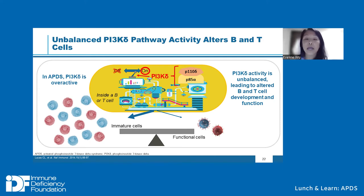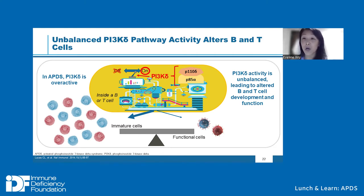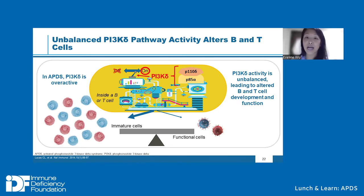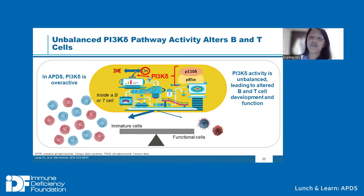When you put a magnifying glass on the PI3 kinase delta protein, it consists of two building blocks: the p110 delta catalytic unit — I think of this as the gas pedal for the PI3 kinase lever — and the p85 alpha regulatory unit, which is like the brakes of the lever.